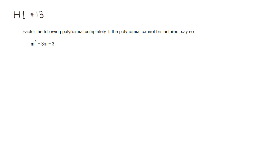So in this case, let's identify A. A is, in this case, 1. B is negative 3, which is the coefficient of M, and the constant term is negative 3, so that's C.